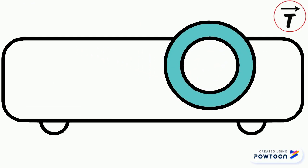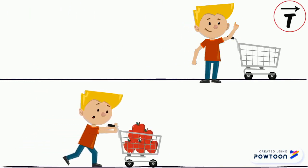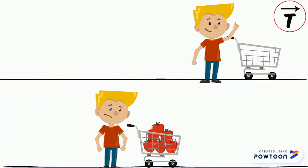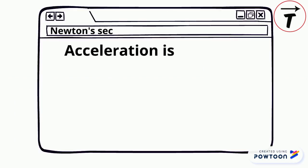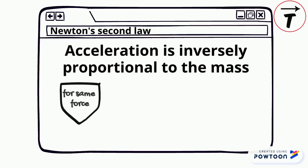Push on an empty shopping cart, then push equally hard on a heavily loaded shopping cart. The loaded cart will accelerate less than the empty one. This shows that the acceleration depends on the mass being pushed. The acceleration is inversely proportional to the mass — for the same force, the acceleration decreases as the mass increases.